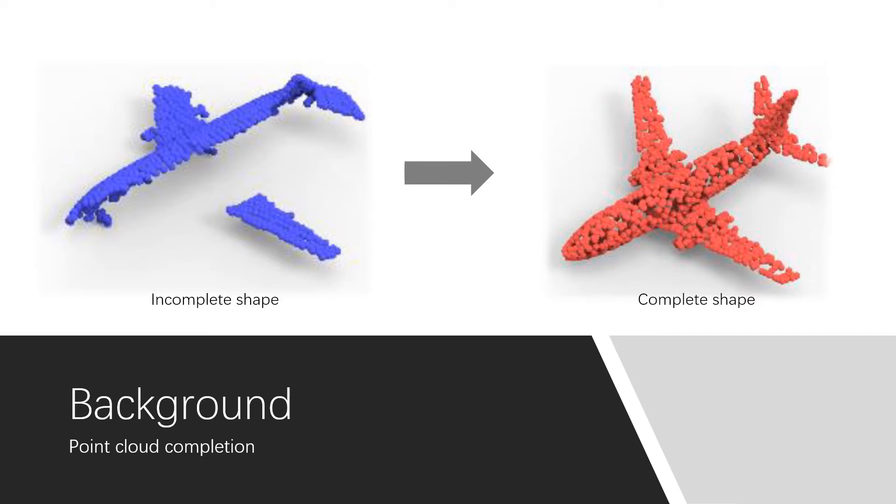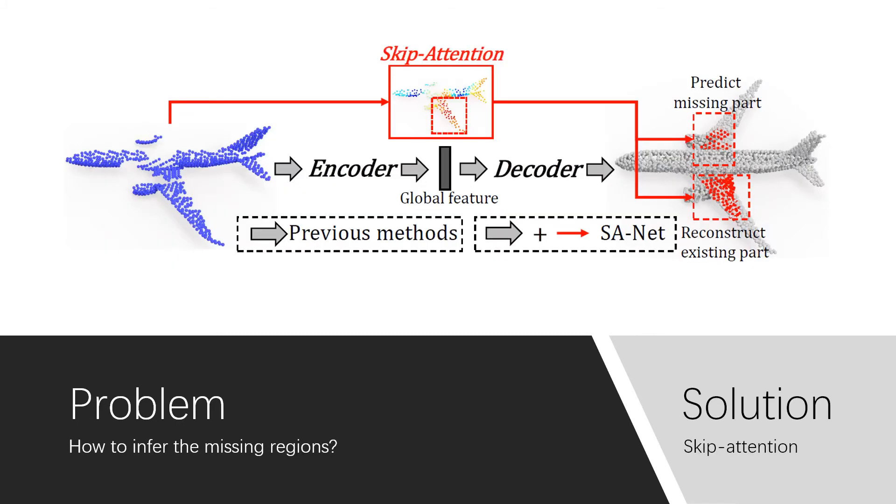Our paper focuses on the problem called point cloud completion. It is to infer the complete 3D shape according to the incomplete input point cloud using a deep neural network. The main focus of this paper is how to infer the missing regions according to the incomplete shape.